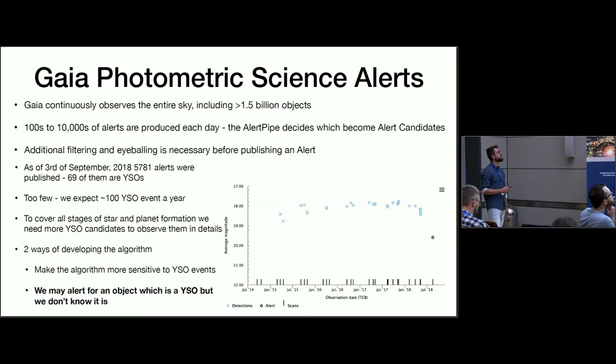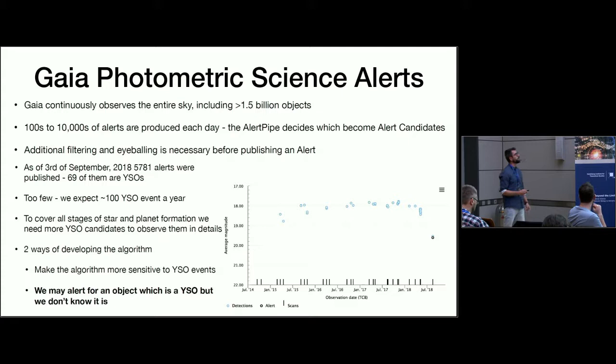From these alerts they have hundreds to ten thousands per day. There is a pipeline which goes through all these data and decides which can become alert candidates. Some additional filtering and eyeballing is necessary before the alert is published. There is the Vetting neural network which decides which is interesting enough to be published.